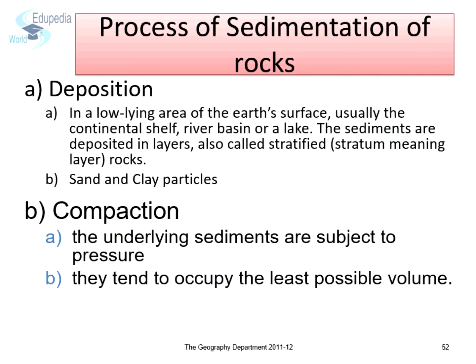The following processes lead to the formation of sedimentary rocks. Deposition is the accumulation of sediment in a low-lying area of the earth's surface — usually the continental shelf, river basin, or a lake. The sediments are deposited in layers. Therefore, sedimentary rocks are also called stratified rocks.